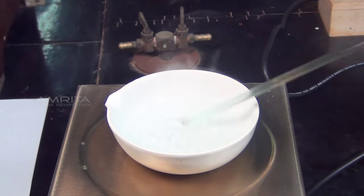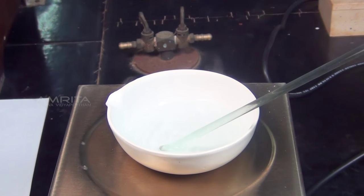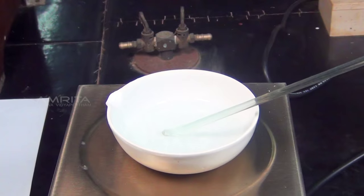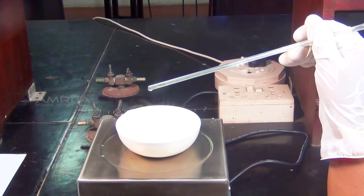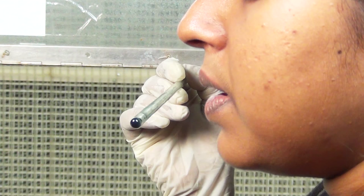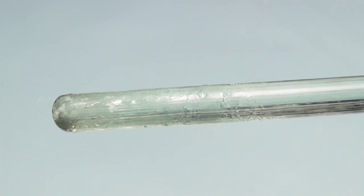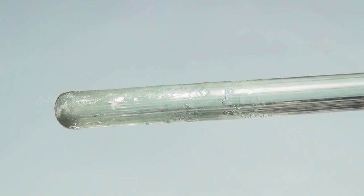When the volume of the solution is reduced to about one half of its original volume, take a drop of the concentrated solution at the end of the glass rod and cool it by blowing. Formation of a thin crust indicates that the crystallisation point has been reached.